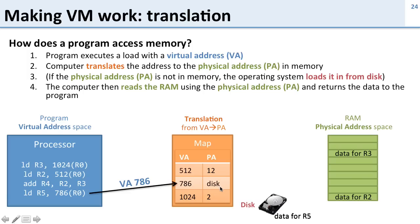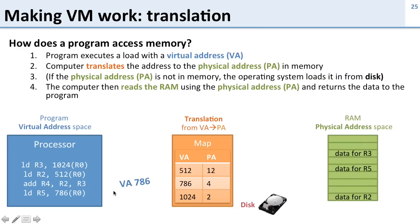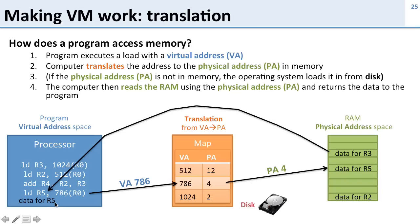We go to virtual address 786, and the map tells us it's on disk — it's not in memory. So we need to load it into memory. We go ahead and load this data into memory. Once it's loaded, we update the translation map so that virtual address 786 now maps to a location in memory — physical address 4 — instead of disk. Now when we put in virtual address 786, we get physical address 4, load it from memory, and return the value. That's how virtual memory works: the program executes a load with a virtual address, the computer translates it to the physical address, fetches from disk if needed, and returns the data.